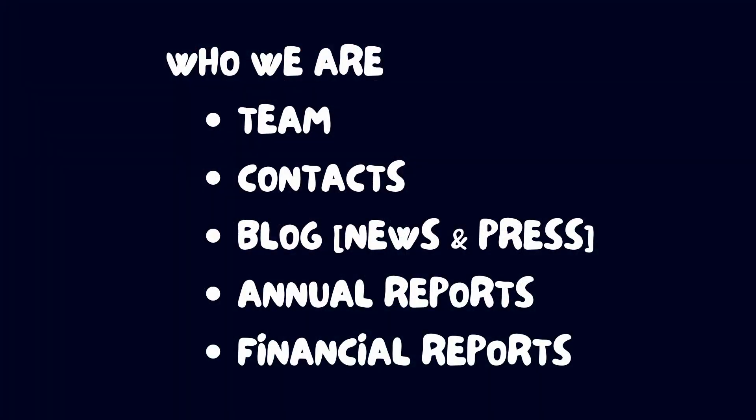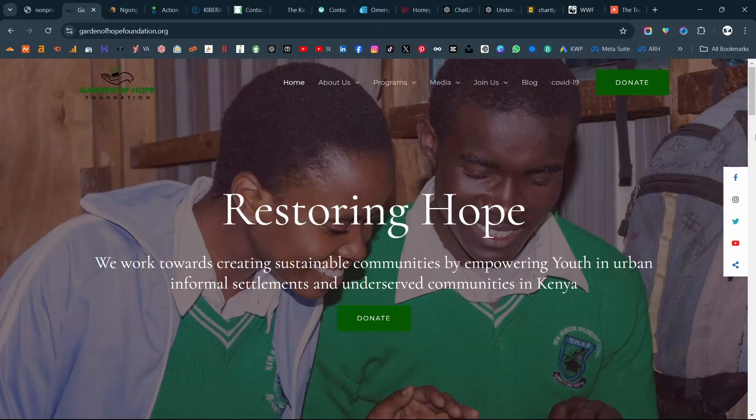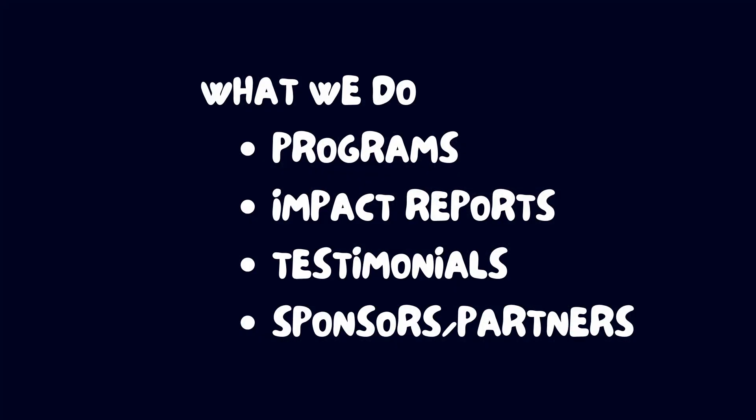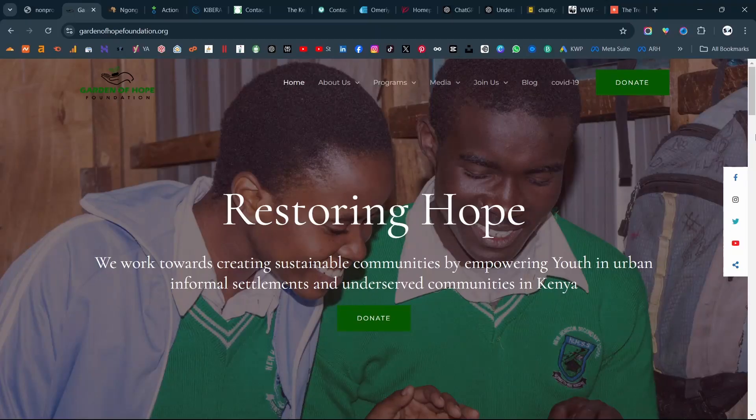Your about us section should have your team, your contact information, and your blog. If you have additional resources, you can also put them under the about section. Then you have your programs or your impact segment — all the information about your programs should be found there.